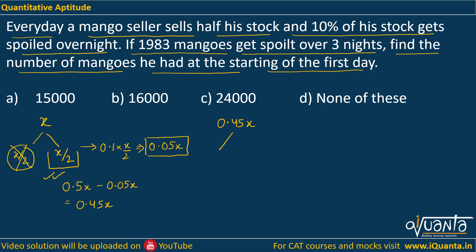So he starts Day 2 with 0.45X. 50% will be sold, so 0.225X will be sold — this is gone. Now 50% will remain, that is 0.225X, and 10% of it will be spoiled. So we multiply it by 0.1, which gives 0.0225X. This is the number of mangoes spoiled on the second night.